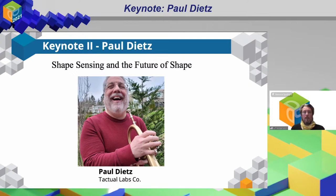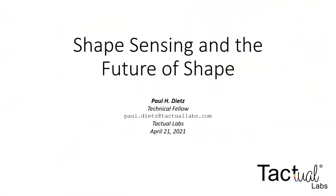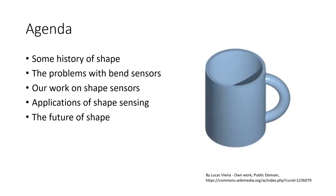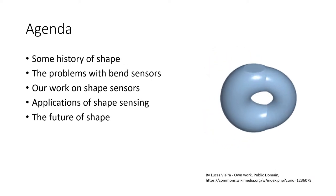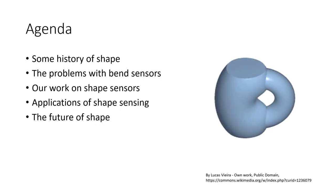Let's take it away! Today I'm going to be talking about shape sensing and the future of shape. We'll start by looking at the history of shape and how the shape of everyday objects has changed over time, and the forces that caused that.